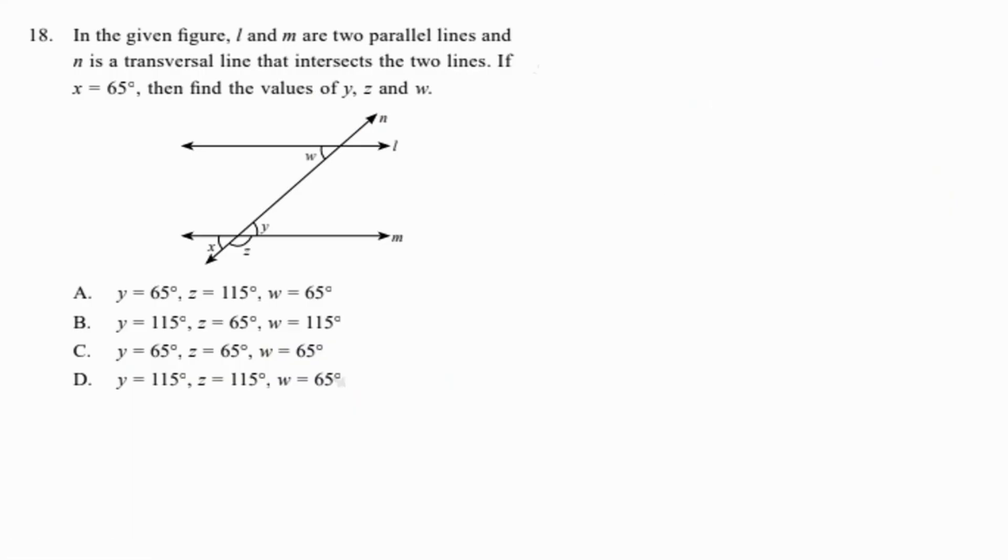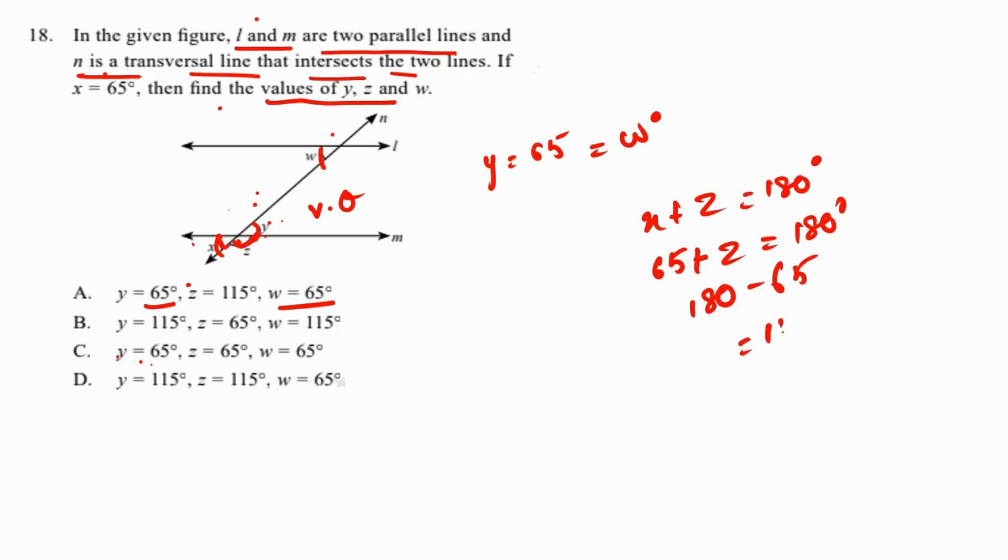In the given figure, L and M are two parallel lines and N is the transversal line. If X equals 65 degrees, find the value of Y and Z. First, if X is 65 degrees, Y is also 65 degrees because they are vertically opposite. And if Y is 65 degrees, W is also 65 degrees because they form alternate pairs. Now X and Z together form a straight angle, so Z equals 180 minus 65, which is 115 degrees. That's in option B.